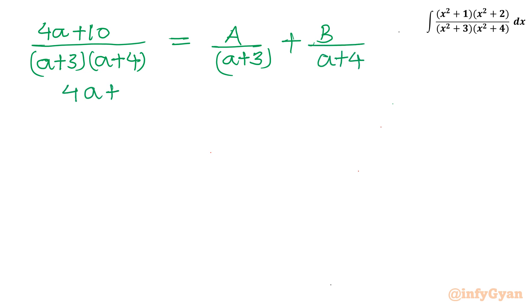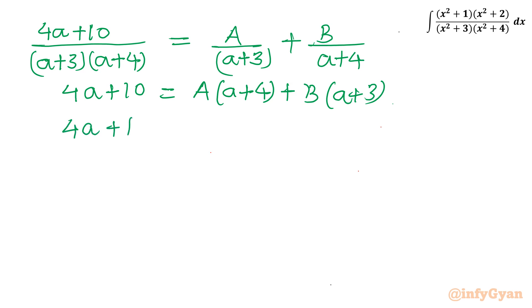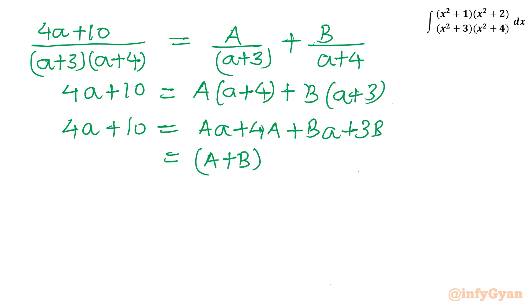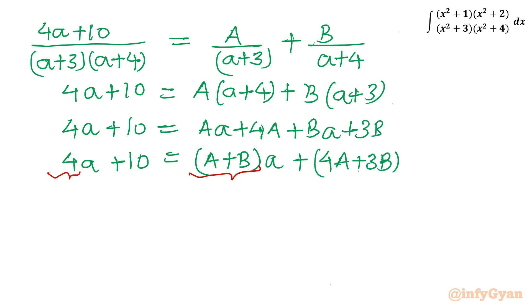Taking LCM: 4a + 10 = A(a + 4) + B(a + 3). Expanding the right side gives (A + B)a + (4A + 3B). Comparing coefficients on both sides: for the coefficient of a, A + B = 4; for the constant term, 4A + 3B = 10.